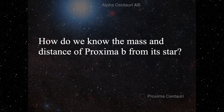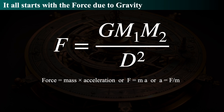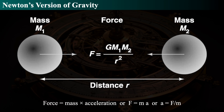Let's find out how we know the mass and distance of Proxima B from its star, Proxima Centauri. We start off with the force due to gravity. Newton's law says that the force due to gravity is equal to the mass of the two objects, M1 and M2, times Newton's gravitational constant, divided by the square of the distance between their centers of mass. That force is always equal to some mass times some acceleration. So if we can figure out how it's moving — accelerating or decelerating — and get its distance, then we can derive a mass.